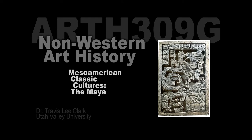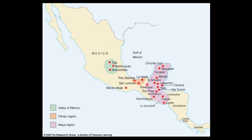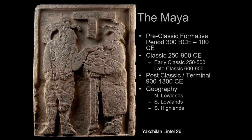Welcome back. Today we're going to talk about the classic culture of the Maya. Just to remind you where the Mayan sphere is — we're basically talking about the Yucatan Peninsula, which is usually described as the northern flatlands or lowlands, the southern lowlands, which are basically the middle section, and then the southern highlands, which gets into Guatemala, Honduras, and El Salvador. The Maya are the classic civilization — the culture that defined the classic period.